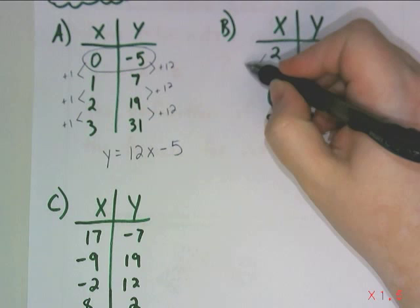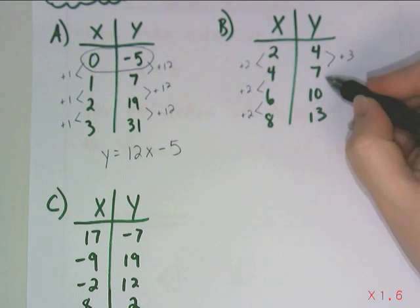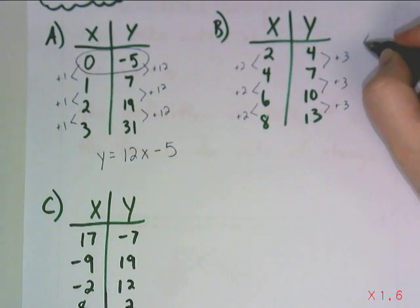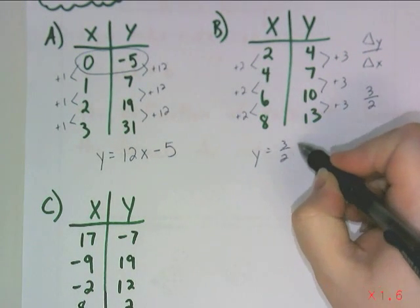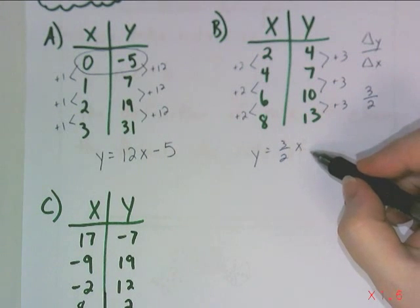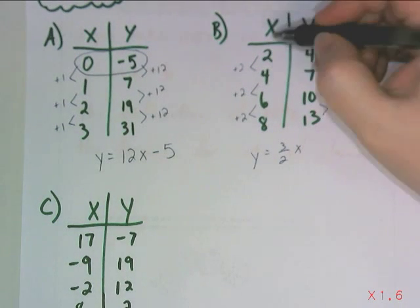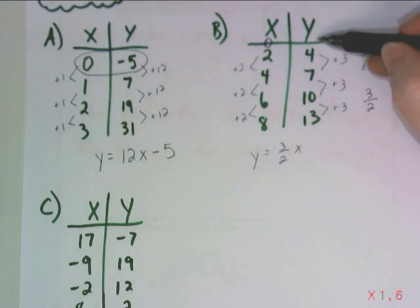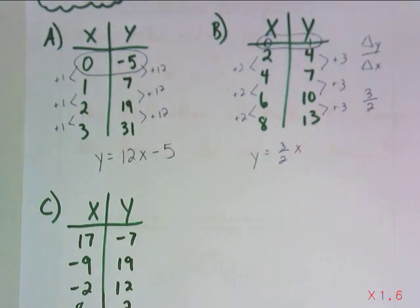For the second table, x is increasing by 2 each time, and y is increasing by 3. So 3 is not my rate of change — I need change in y over change in x, which is 3 over 2. That is my rate of change, so y equals three-halves x. To find the y-intercept, I can back my table up one step: instead of adding 3, I subtract 3 to find that across from x equals 0, y would equal 1. So the equation is y equals three-halves x plus 1.